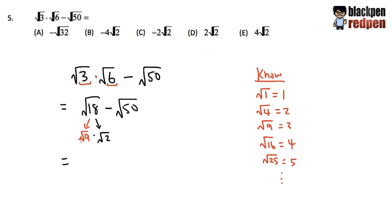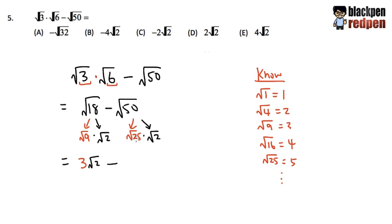The reason for us to do that is so that square root of 9 will be a regular number, 3. And then we'll just maintain the square root of 2 right next to it, just like this. Now let me bring down the subtraction, and then we are focused on the square root of 50. We'll do the same. Let's see which perfect square goes into 50.